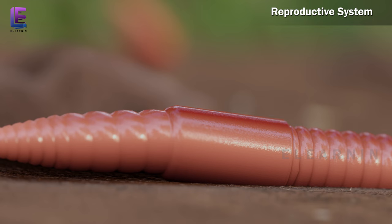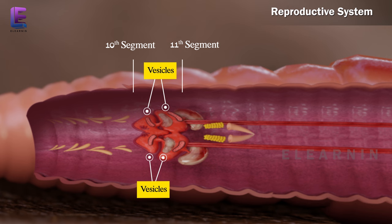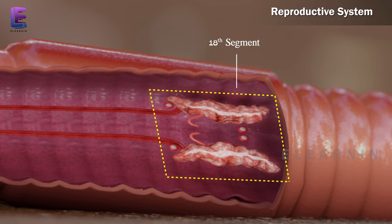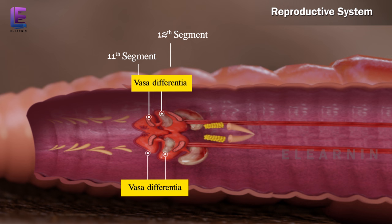Reproductive system: An earthworm is a bisexual creature. There are two pairs of testes present in the 10th and 11th segments. Their vasa differentia run up to the 18th segment where they join the prostatic duct. There are two pairs of vasa differentia in the 11th and 12th segments.